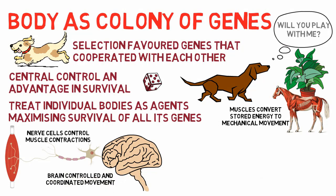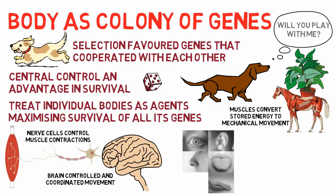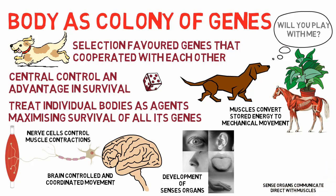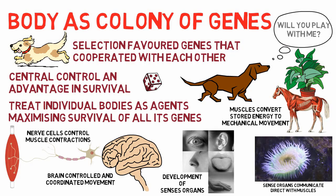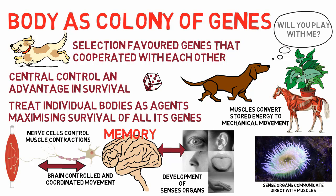As movement is only advantageous if it matches events in the physical world, natural selection favored animals equipped with sense organs. In some organisms, sense organs directly communicate with muscles, like in sea anemones. In other species, the brain became an intermediary. Additionally, the evolutionary invention of memory allowed muscle contractions to be influenced by past experience.